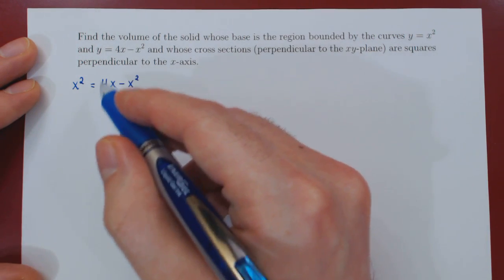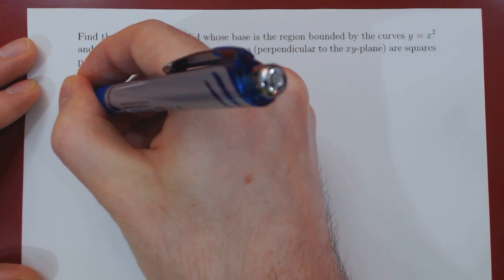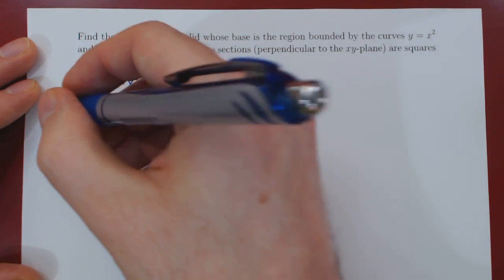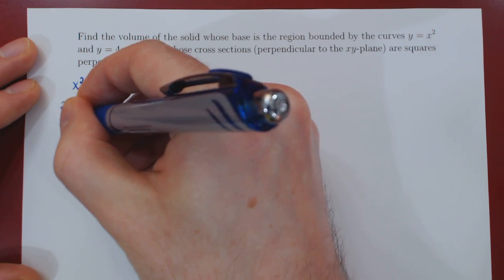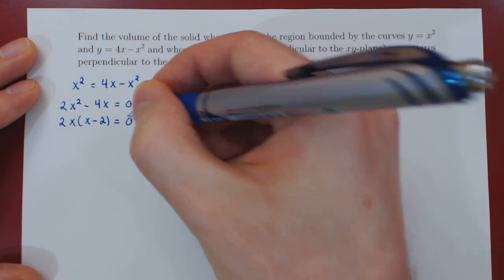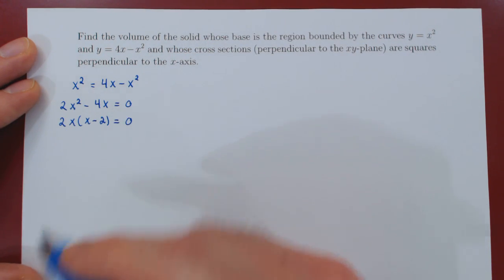To solve for x, we simply send these terms on the left-hand side. We can factor 2x. And now the solutions are trivial. x equals 0, or x equals 2.